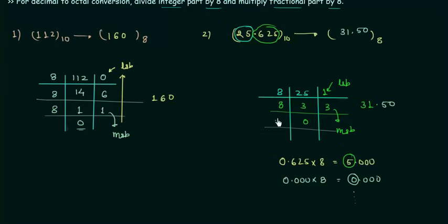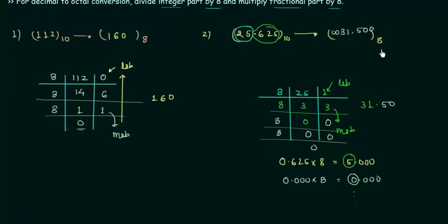So the octal equivalent of 25.625 is 31.50. If you divide 0 again by 8 you will have remainder as 0, and we are getting a bunch of zeros before 3 and after 5 — the value remains the same so we don't usually write the trailing zeros. We will settle with 31.5.